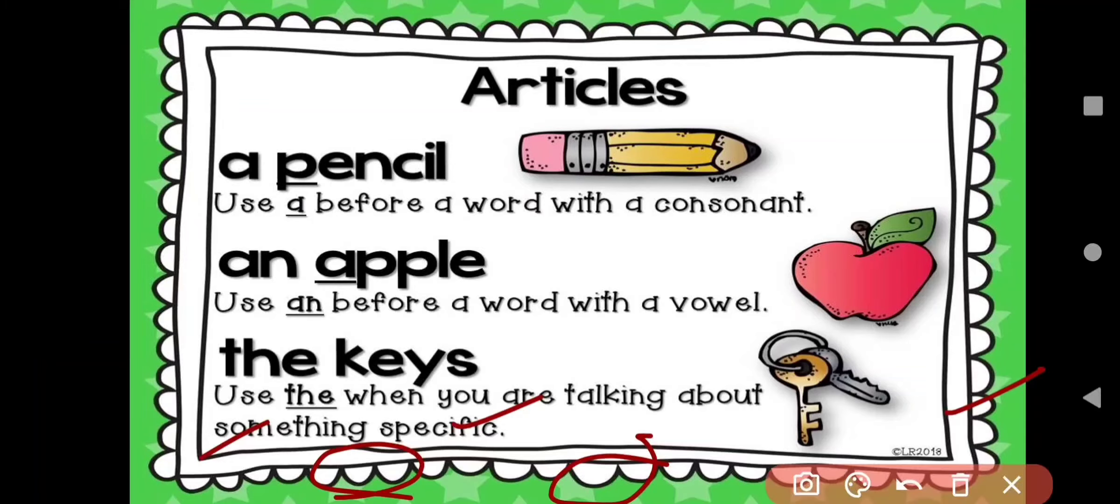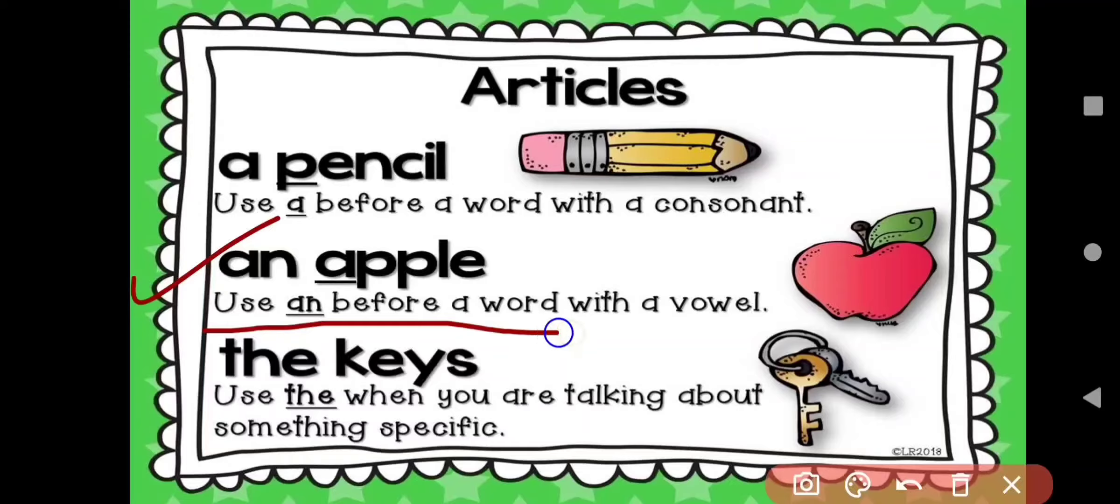Articles like a pencil. Use a before a word with a consonant. We use a before consonant. Like here, a pencil. Here we have a consonant sound, p, pencil. And here, an apple. Use an before a word with a vowel. Vowel means we use an before a word starts with vowel sound. Like here, an apple. A is a sound of vowel, so we will use an.